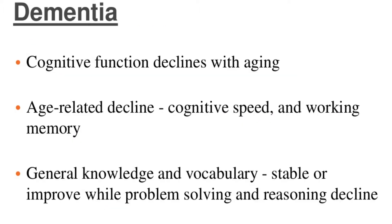Dementia is a condition in which cognitive function declines with ageing. It is an age-related decline with cognitive speed and working memory, while general knowledge and vocabulary remain stable or improved, and problem solving and reasoning will usually decline.